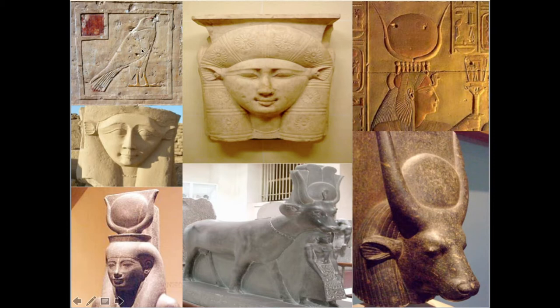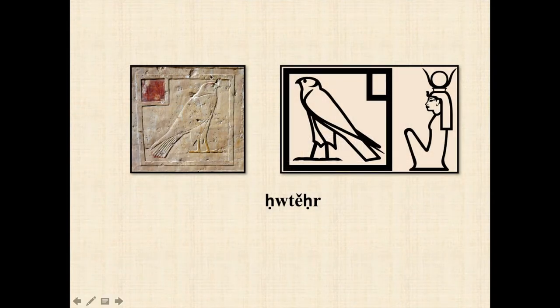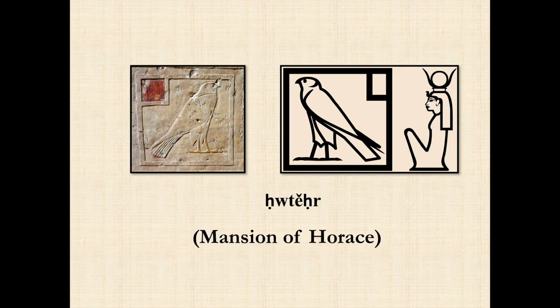We'll be talking about Horus in a minute. When we look at this goddess we're actually seeing a representation of two gods at the same time. Her name is Hathor, which comes from the Greek — Hathor. This is her symbol or sign, and here's another version. This is sort of the Romanization of ancient Egyptian: Khawat-Kher. Khawat-Kher means the mansion of Horus.